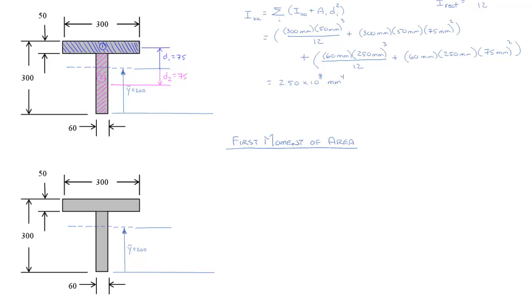We're going to do the first moment of area about two different locations. The first one is about the neutral axis or at the neutral axis. That's a fairly common request because we know that shear stresses are going to reach their maximum at the neutral axis and so we want to get the first moment of area or Q to be able to calculate that.